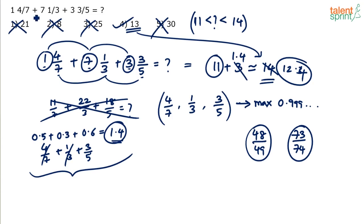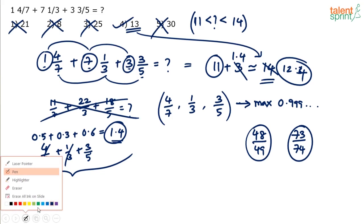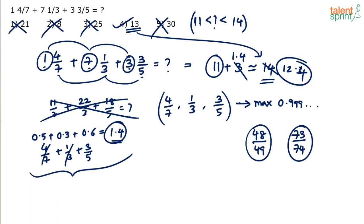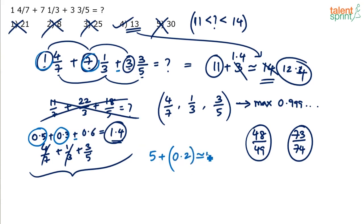Similarly, if instead of plus 3/5 we have minus 3/5, the integer sum becomes 1 plus 7 minus 3, which is 5. For the fractional part, 0.5 plus 0.3 minus 0.6 equals 0.2. So the total is 5 plus 0.2, approximately 5.2. When a mixed number is negative, both its integer and fractional parts are subtracted.